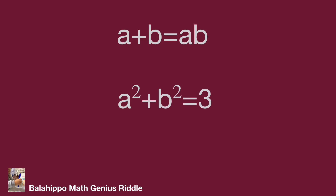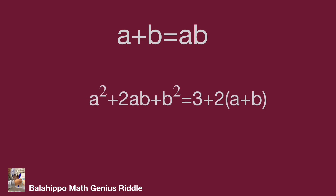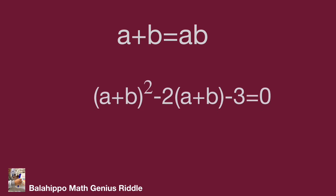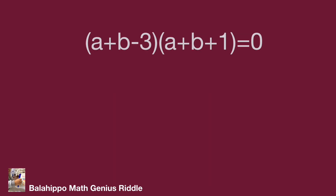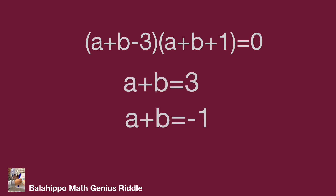We are going to incorporate the a plus b factor into a squared plus b squared equal to 3. Add 2ab to both sides of the equation. Since a plus b equals ab, adjust the right side accordingly. We get (a plus b) squared minus 2 times (a plus b) minus 3 equal to 0. Treating a plus b as one item and factoring: (a plus b minus 3)(a plus b plus 1) equals 0. So a plus b equals 3 or a plus b equals minus 1.